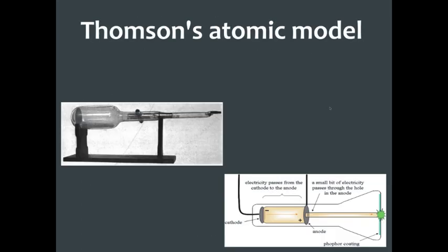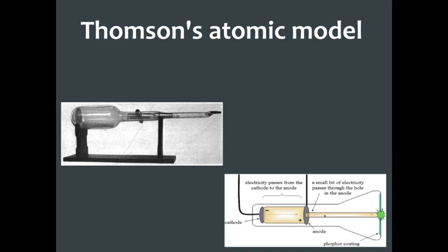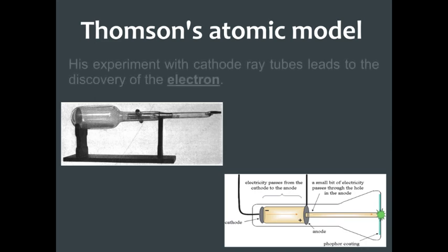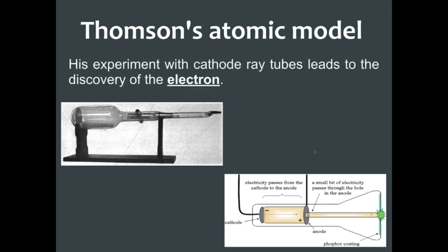The next one is Thompson's atomic model. Thompson performed some experimentations, one of which was using cathode ray tubes. In the glass tube, there was a cathode — a negative end — and a positive end called an anode, and electricity would flow through. At the end of the anode there was a little hole, and he observed that some light was created, flowing through, and being reflected on a screen at the end. He said electricity is made of something that creates light, but at the same time it behaved like matter. Through these experimentations, he discovered the electron. His experiment on cathode ray tubes led him to the discovery of the electron.